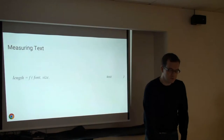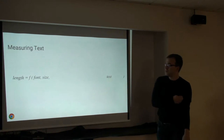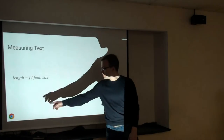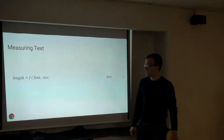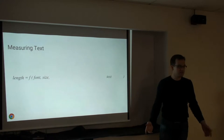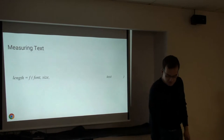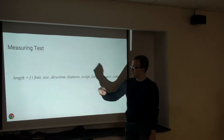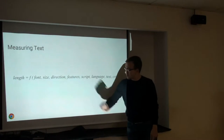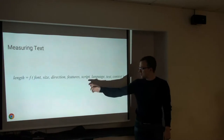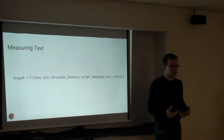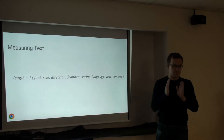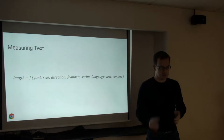So let's get into measuring. Intuitively, one might think the length of a piece of text depends only on the font selected, the size of that font, and the text itself. But it turns out this equation is a little bit longer. It does not only depend on the font and the size, but also on the direction, on typographic features, the script of the language — that's the writing system — and the language and context: not only the actual text you're looking at, but also the text around it.